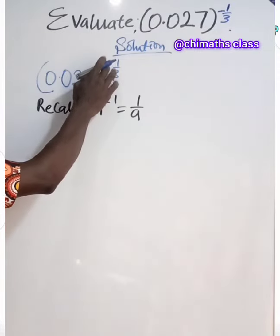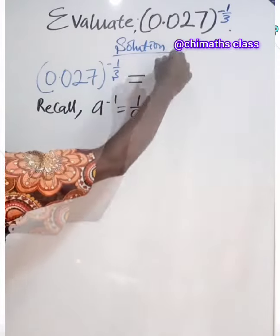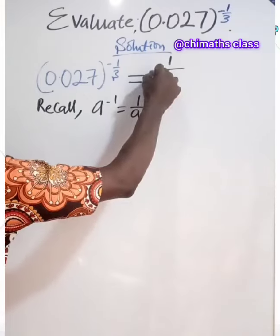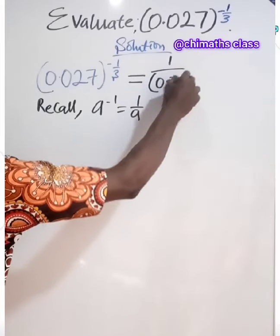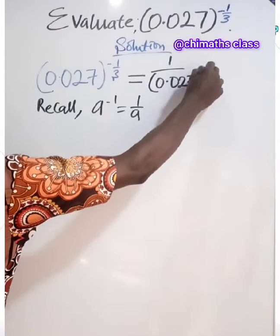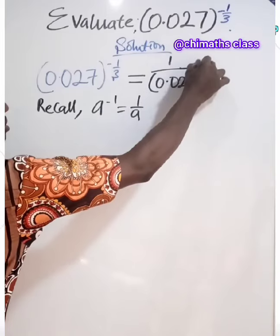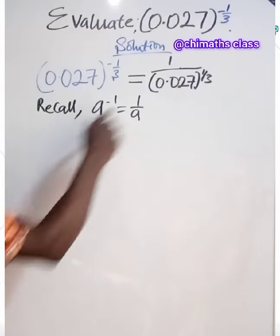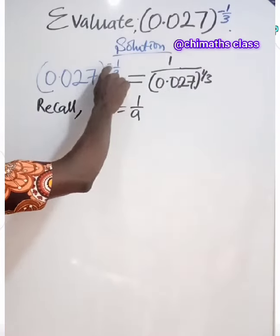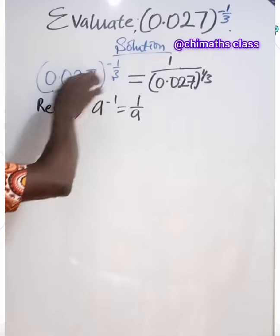So let's apply it here because of this minus sign. We have 1 over 0.027, all raised to the power 1 over 3. Here, we have removed the negative sign and replaced it by what? 1. That is the reciprocal of this.